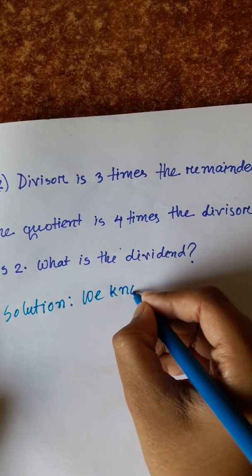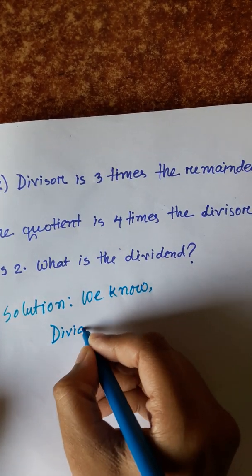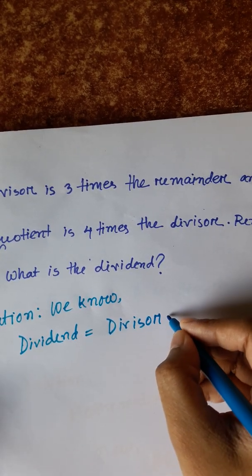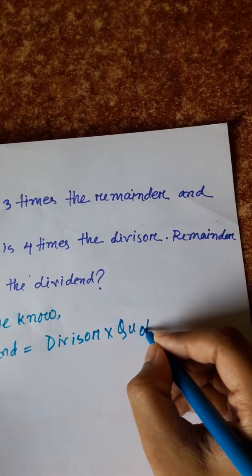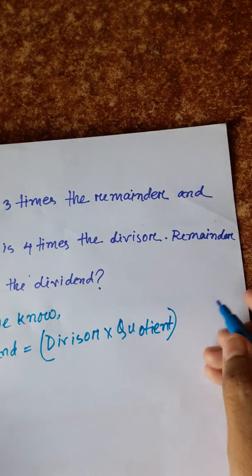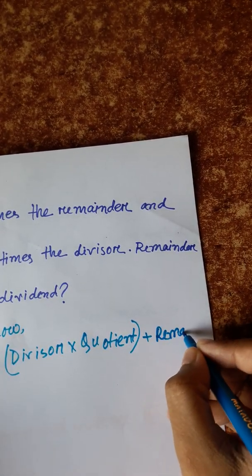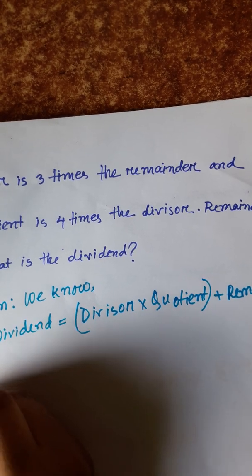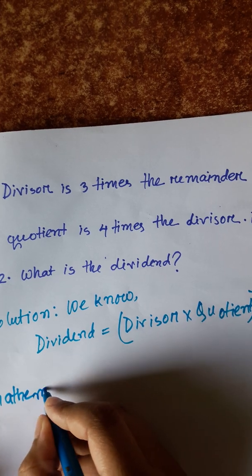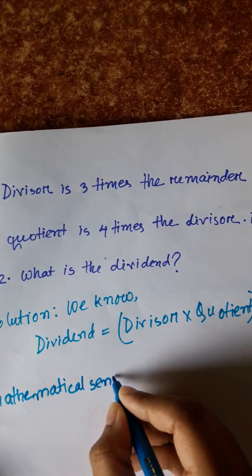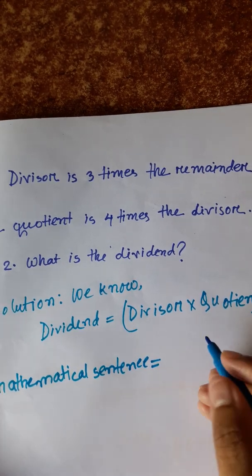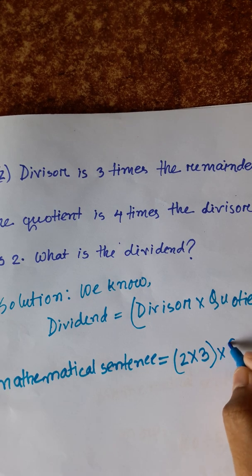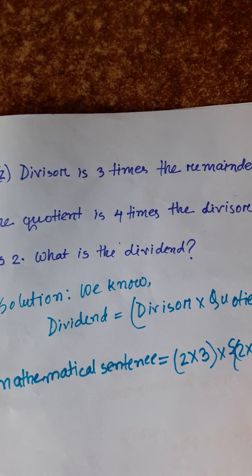We know: dividend equals divisor into quotient plus remainder. The mathematical sentence is: 2 into 3 into (2 into 3 into 4) plus 2.